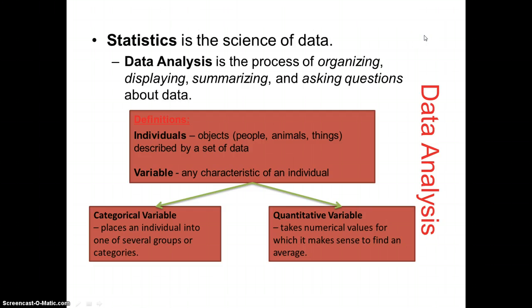Remember that when we analyze data, it's all about organizing the data, summarizing the data, showing the data, asking questions about the data. What we do is we look at individuals, and we look at perhaps people, animals, things, and we look at variables, any characteristic of those individuals. They might be a categorical variable, in which an individual is in one of several groups or categories, or it might be a numerical, a quantitative variable, in which we look at the values and we find an average of those values, a mean of those values, and we look at how those values are displayed.